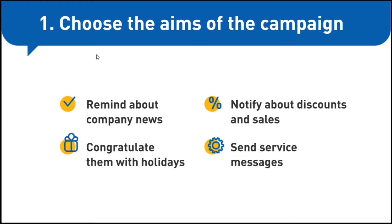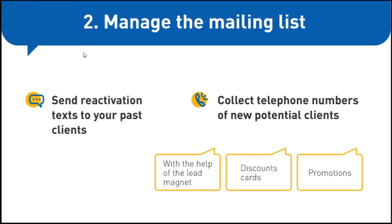Since the goals are clear, let's move to the database. There are several ways to grow it. It's possible to do this with the help of a lead magnet on the website — create a special form in which people enter their contacts in exchange for a discount, promo code, or useful content. Another way is discount cards, where clients fill in the blanks and give their telephone numbers. You can also run promotions where people send an SMS with a code or keyword to your number to win prizes. These ways are very effective but take much time — for example, collecting numbers via the website takes at least months.